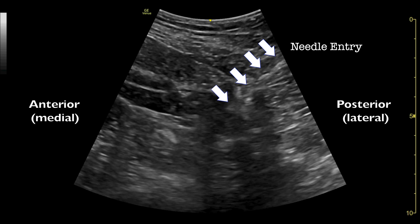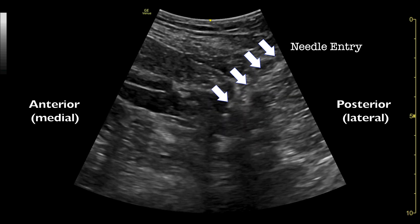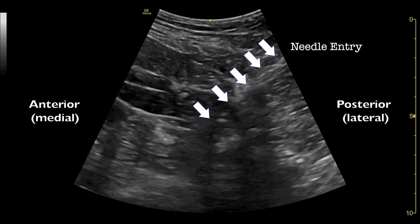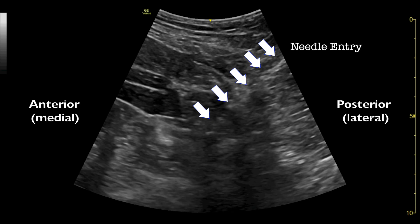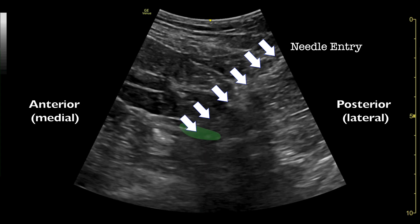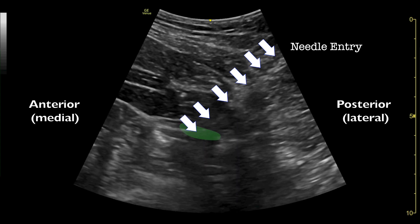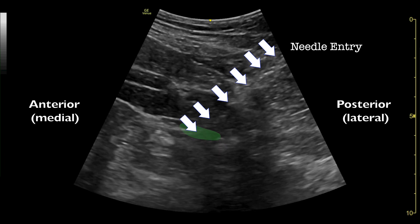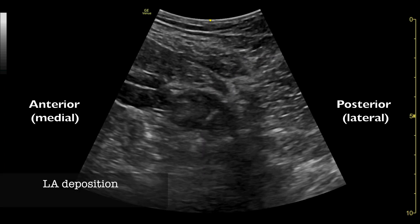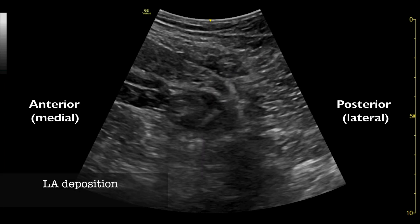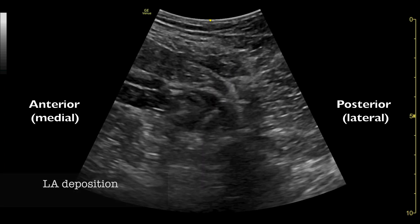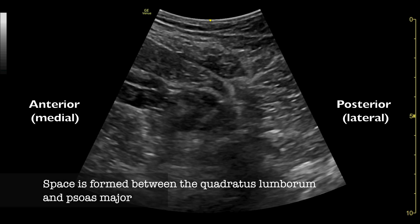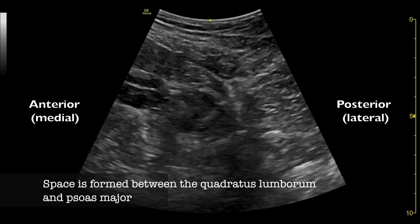The target area for local anesthetic deposition is the fascial plane between the quadratus lumborum and the psoas major muscle. After negative blood aspiration, local anesthetic is injected while observing a space opening up between the quadratus lumborum and psoas.